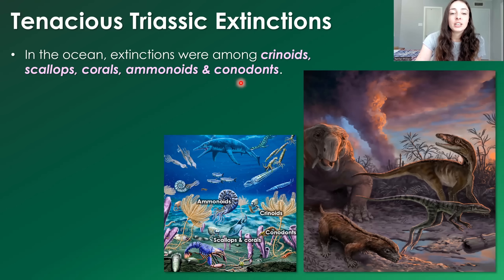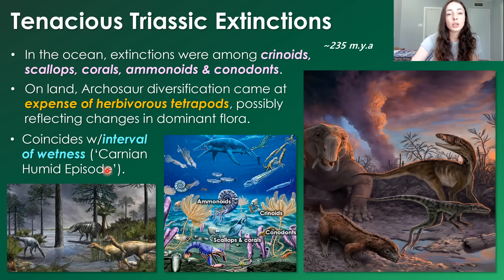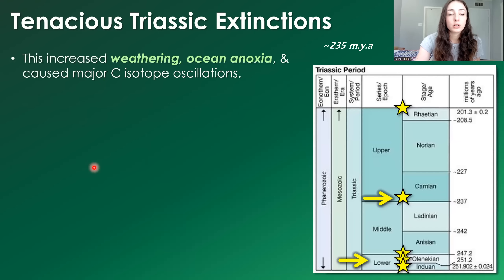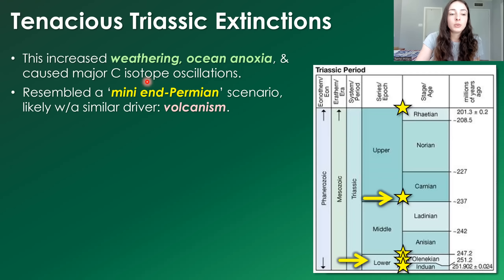During the end-Middle Triassic extinction, losses occurred among crinoids, scallops, corals, ammonoids, and conodonts. On land, archosaur diversification came at the expense of herbivorous tetrapods, possibly reflecting changes in dominant flora. This Middle Triassic extinction coincides with an interval of extreme wetness called the Carnian Pluvial Episode, which increased weathering and ocean anoxia. This event resembled a mini-end-Permian scenario with a similar driver — volcanism — but is minor compared to the end Triassic event 30 million years later.